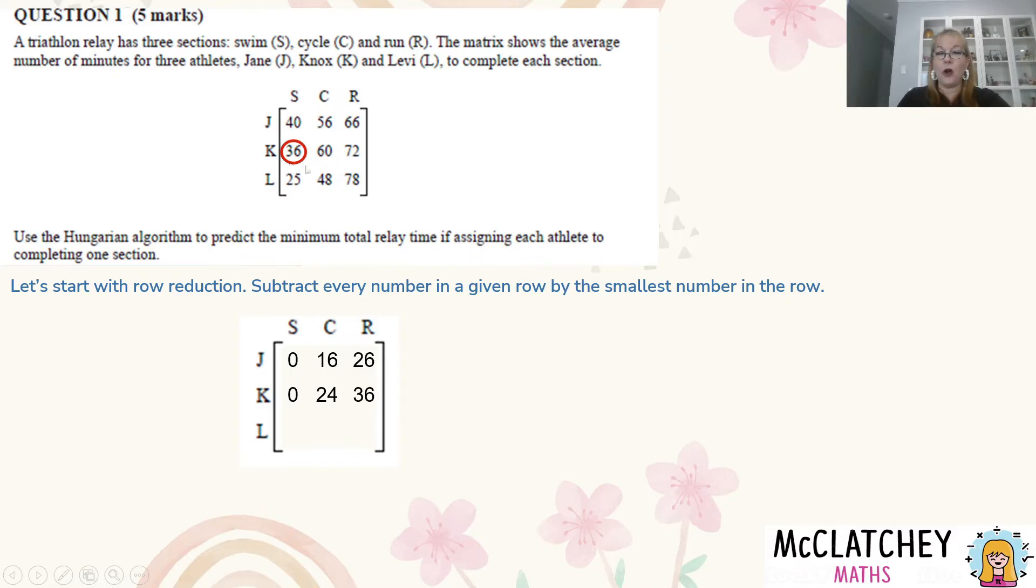Our final row, let's look for the smallest number and it's also the one for Levi and it's the swim again - it seems like everyone is a really fast swimmer. So 25 take away 25 is 0, 48 take away 25 is 23, and 78 take away 25 is 53. We've done our row reduction and we get our first of five marks for correctly reducing each row.